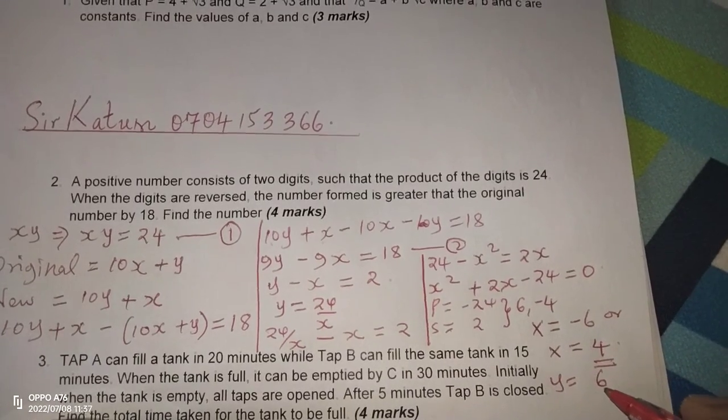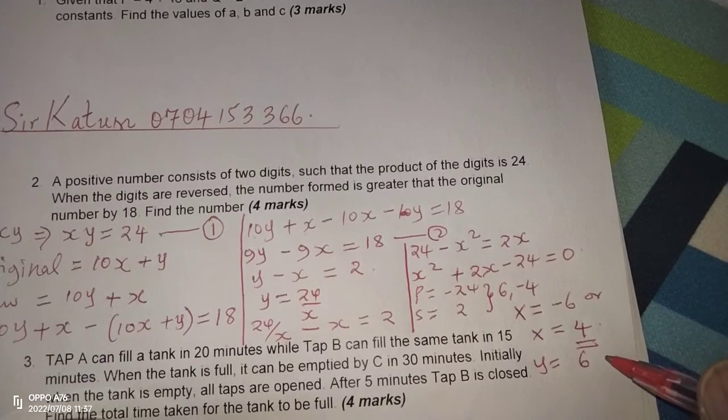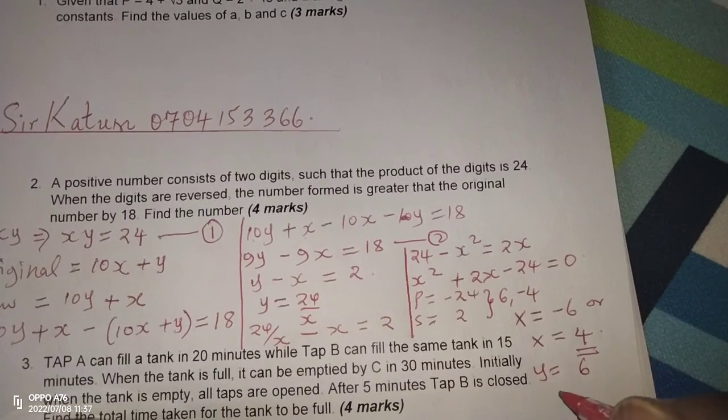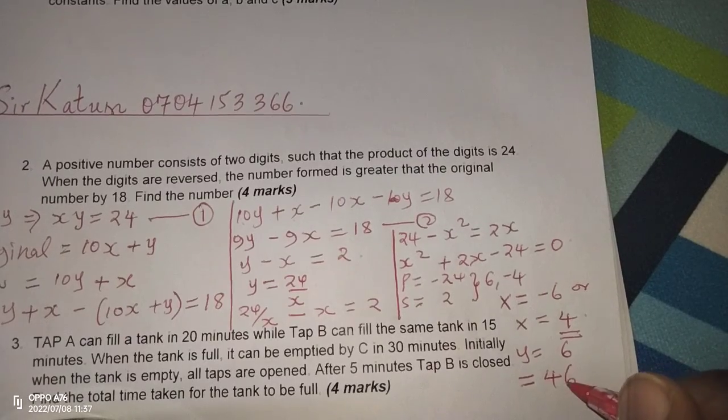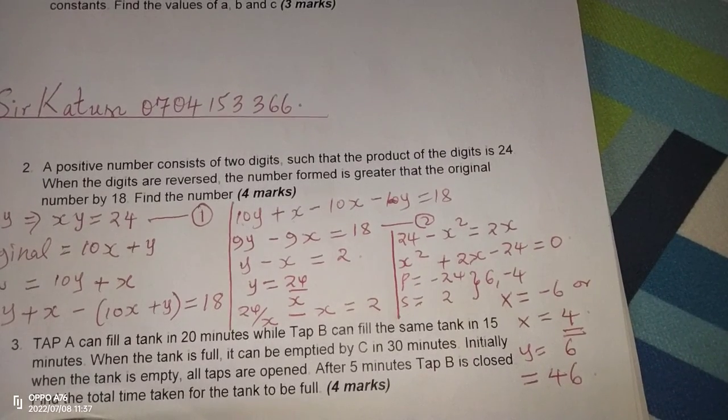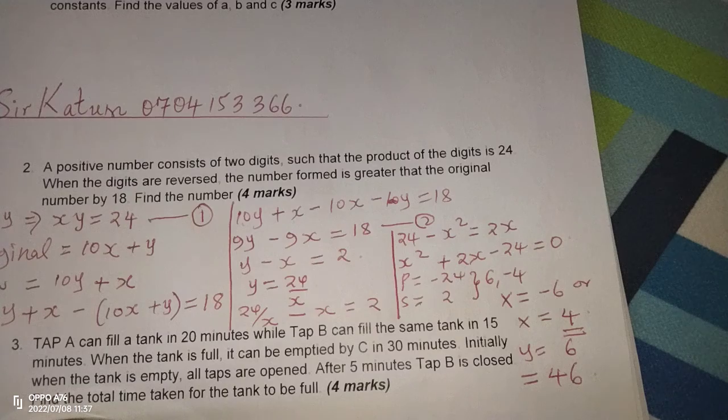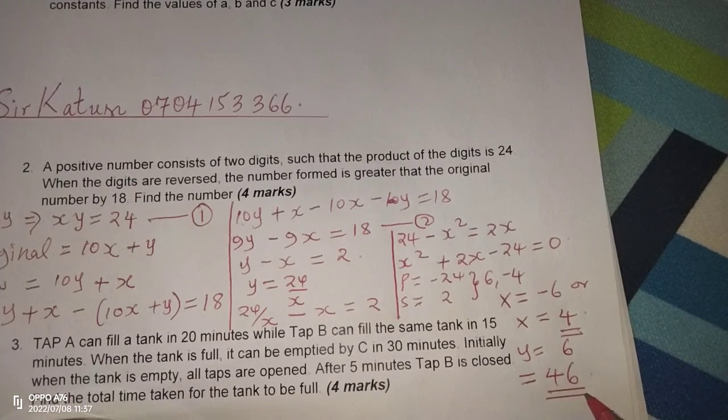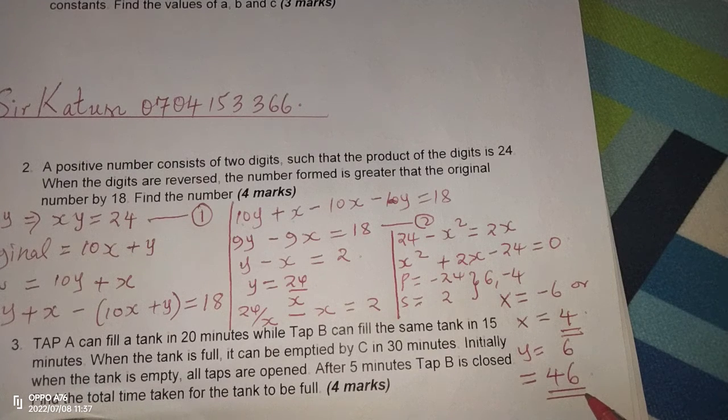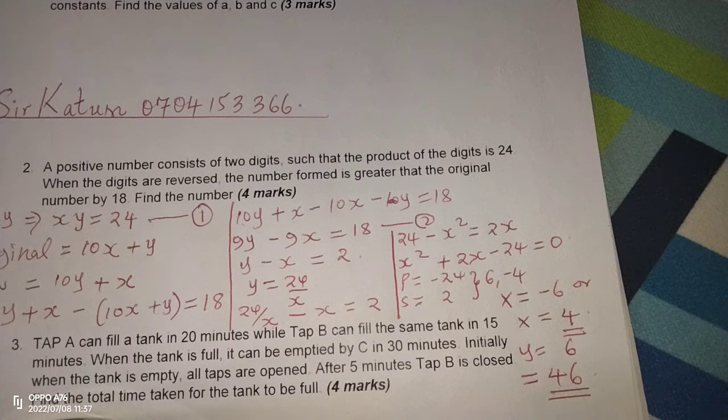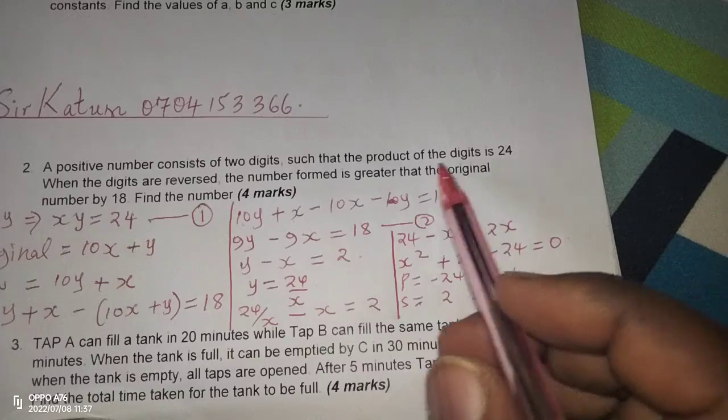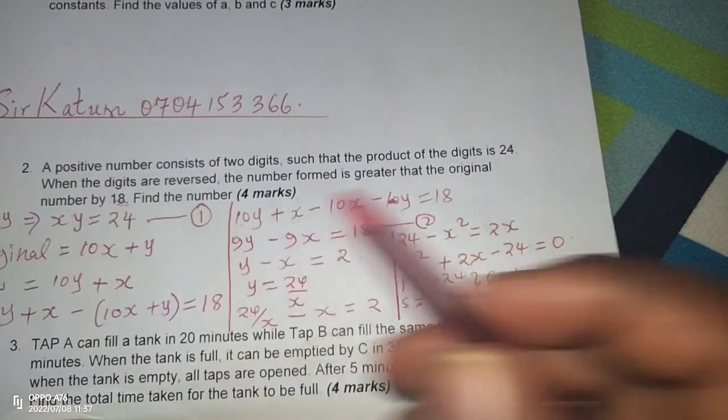So the value of X is 4, and that of Y is 6, which means the number is XY, and the number will be 46. When we take 46, you'll find the two numbers making up 46 have a product of 24. And again, when we reverse the number to 64, you'll find the difference between 64 and 46 is 18, according to the information we have here.